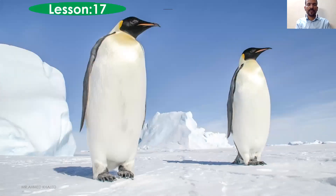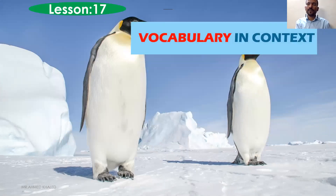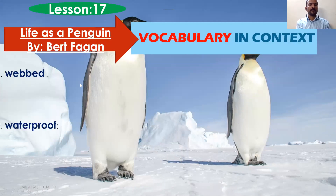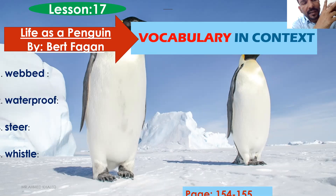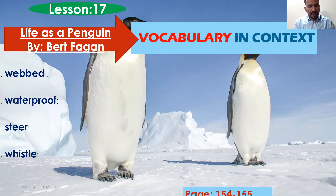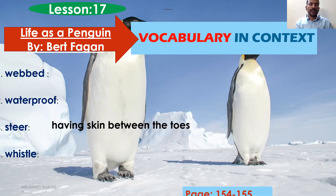We'll start with our first main point, which is vocabulary in context. We have eight vocabulary terms. The first one is 'webbed.' Webbed means penguins have skin between their toes and feet. We call it webbed — having skin between the toes. You can see it in our picture.